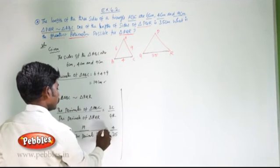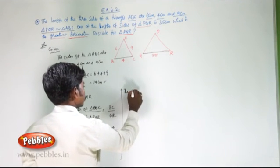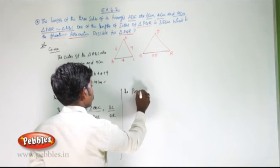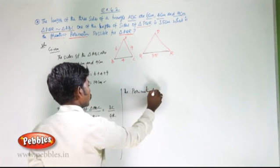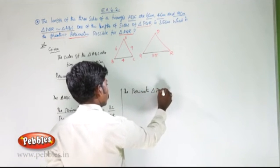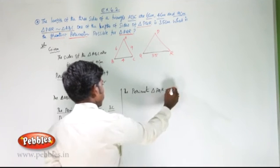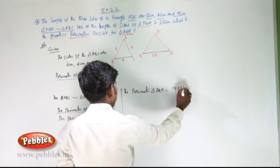By cross multiplication, the perimeter of triangle PQR is equal to 19 times 35 divided by 4.